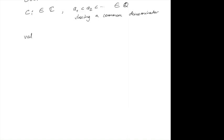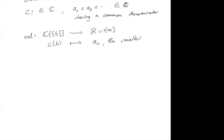We have the valuation map going from the field of Puiseux series to ℝ ∪ {∞}, which sends a series to its smallest exponent, and the zero series goes to infinity. This valuation satisfies the three axioms of a so-called non-Archimedean valuation.